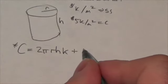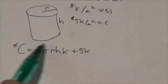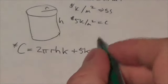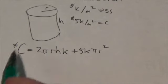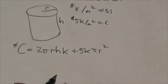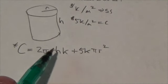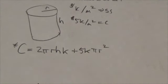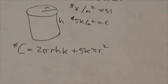And then we're going to add to this 5k times the area of that bottom piece, which is simply going to be πr². So this is the beast right here that we're going to take the derivative of. I just want to identify again that r and h are the variables here. K is not a variable. K is related to the price.